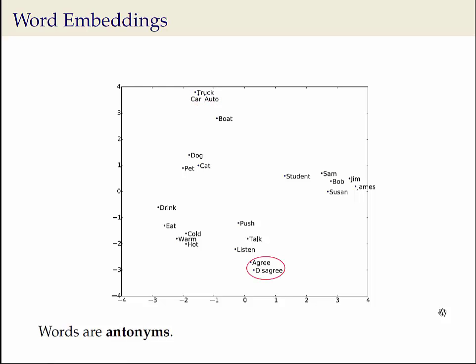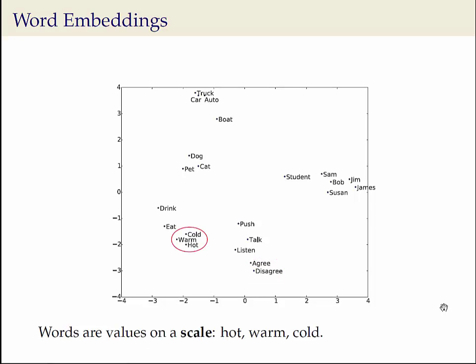The antonym relationship between words is highlighted by the agree-disagree pair. Words which represent values on a scale are also very similar in this space — here are the cluster of words cold, warm, and hot.